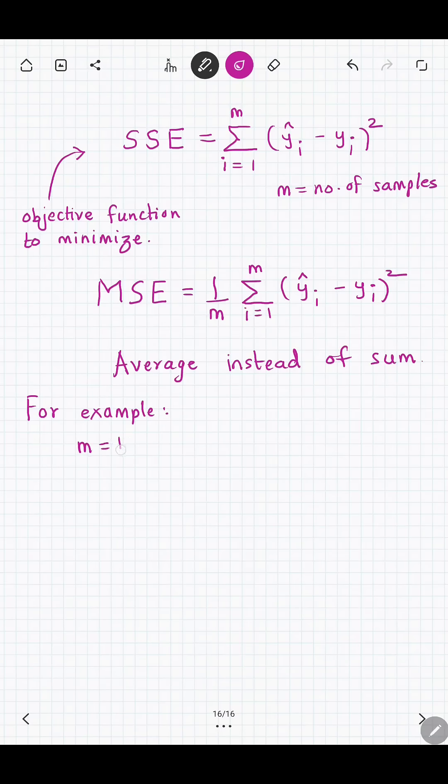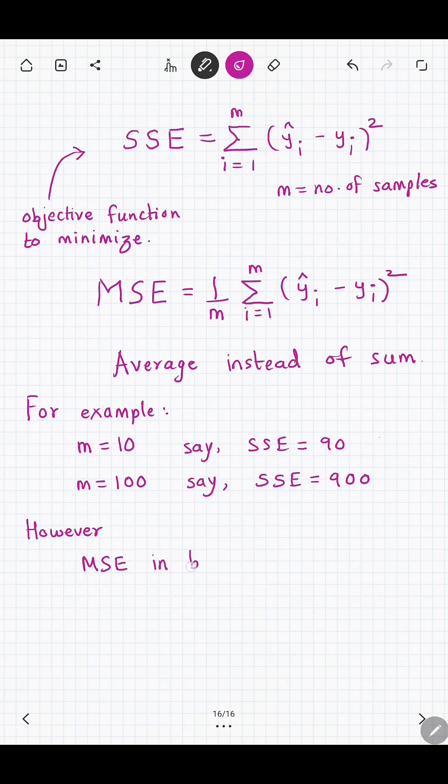Because if you have a data set of size 10, sum of squared errors is let's say 90. If you have a data set of size 100, sum of squared errors will be let's say 900. However, the mean squared error is still 9, for example, roughly. So that is why we use mean squared error.